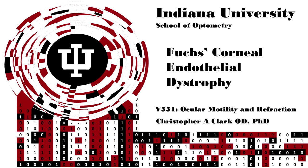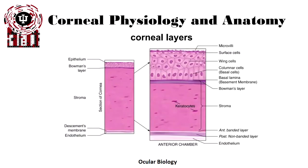This is Fuchs Corneal Endothelial Dystrophy. If we think about the layers of the cornea, there are five main layers we consider. There's the epithelium, which is there to protect us from infections, and its basement membrane, the Bowman's layer. There's the stroma, which composes the bulk of the cornea and is largely composed of collagen fibrils.